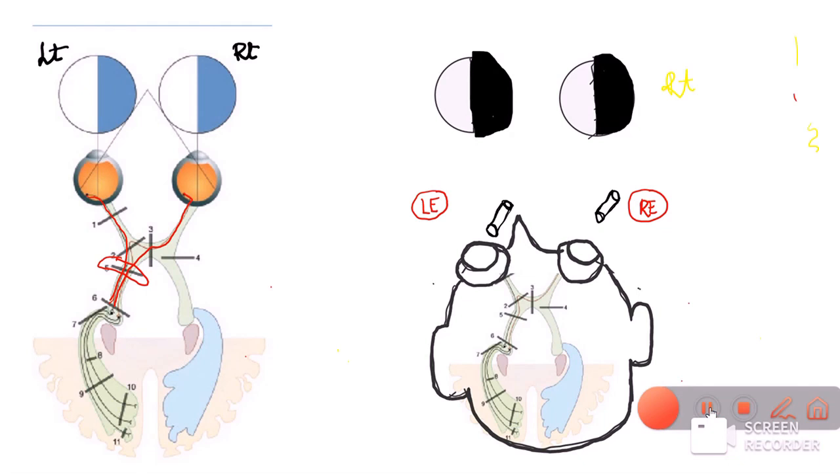Now using this focal beam of light, let us throw this beam so it stimulates only the temporal half of the retina of the left eye. Similarly, let us throw the light in the right eye in such a way that it stimulates only the nasal part of the retina of the right eye.